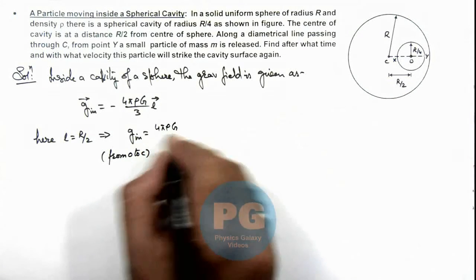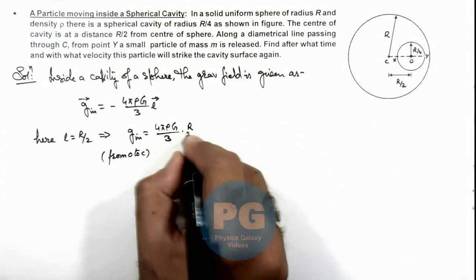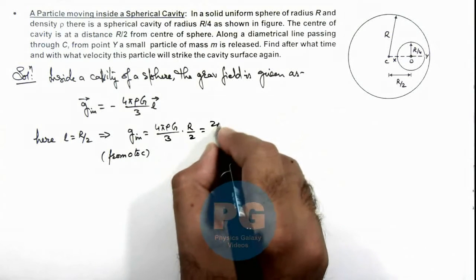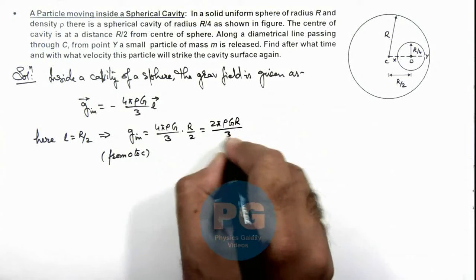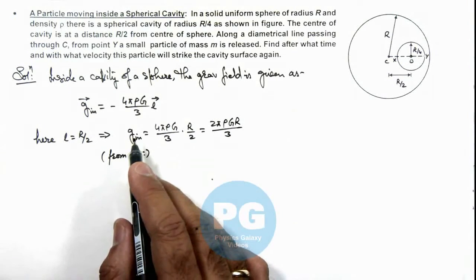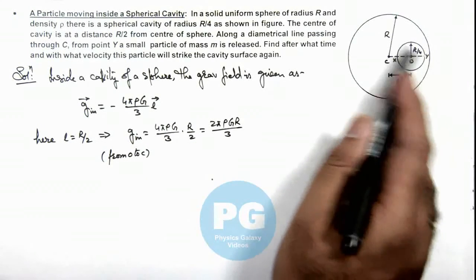So inside it will be given as 4πρG/3 multiplied by R/2, which is 2πρGR/3. That is the value of acceleration due to gravity within the cavity everywhere.